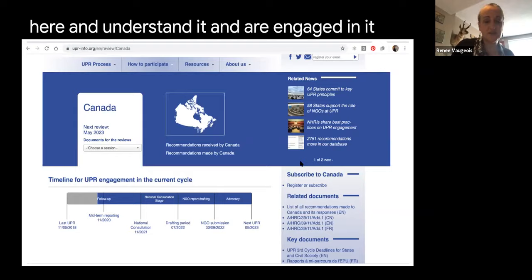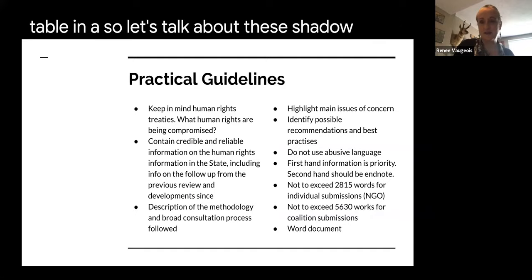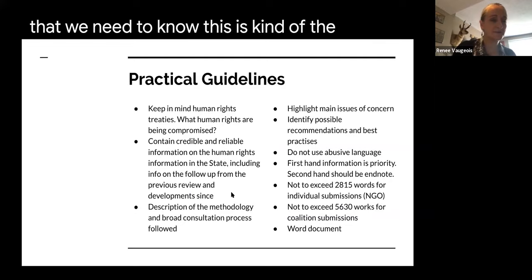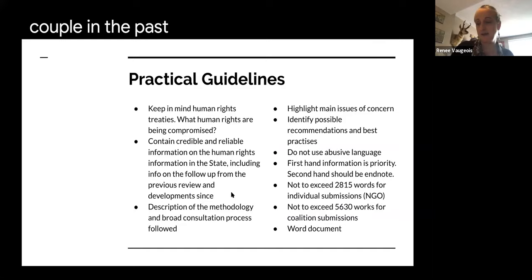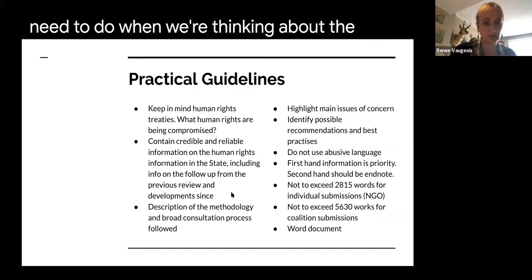I'd like to work as a collective toward this next Universal Periodic Review and really get things on the table in a meaningful way. Let's talk about these shadow reports and what we need to know. I've submitted a couple in the past — once as a coalition of agencies and once just as the John Humphrey Center.